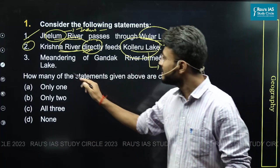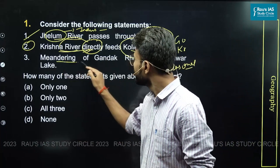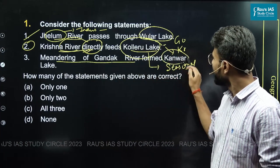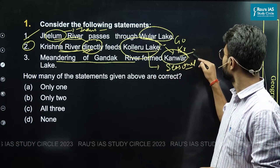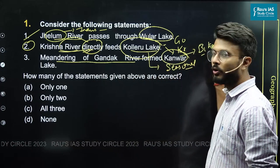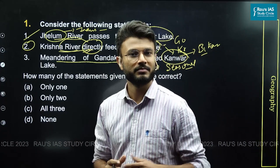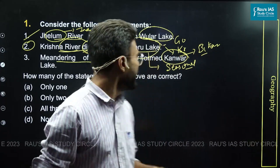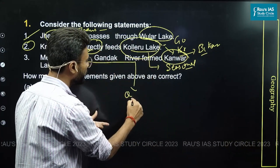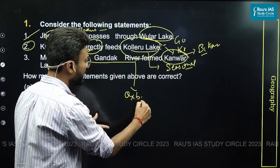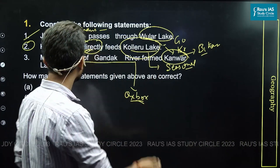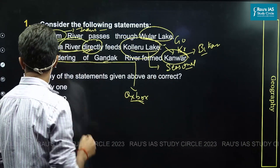The third statement says that the meandering of the Gandak river formed the Kanwar lake. This lies in the state of Bihar. We all know that in 2020 it was declared as a Ramsar site. This is an example of a residual Oxbow lake, and this Oxbow lake is formed by the meandering of the Gandak river. So this statement is also correct.